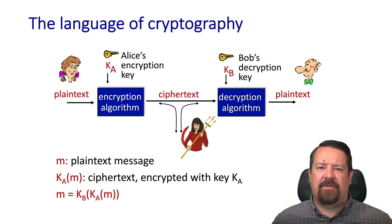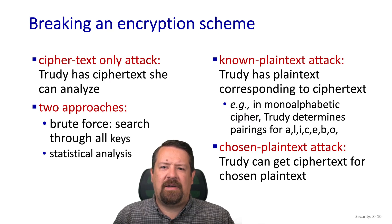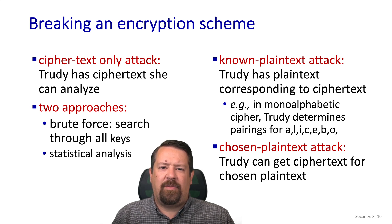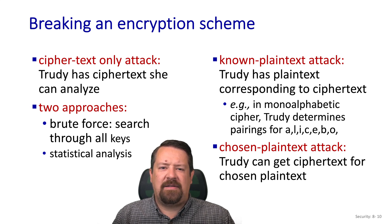We want the ciphertext to have certain properties. In particular, there shouldn't be any feature of the ciphertext that would make it easy for an attacker to guess the original plaintext. In a ciphertext-only attack, the attacker intercepts the ciphertext and can perform statistical analysis of its patterns or a brute force attack — trying all possible keys. If the encryption algorithm is ideal, statistical analysis won't produce anything useful, and for any properly designed algorithm, the brute force attack will be very expensive in terms of time and processing.